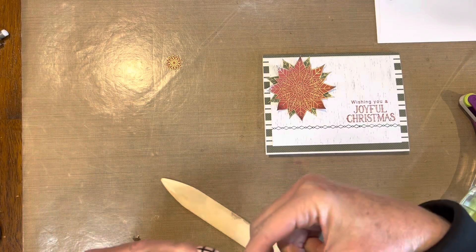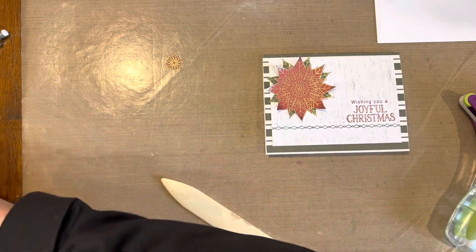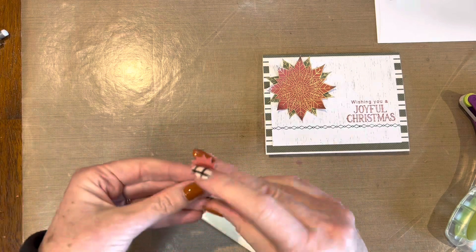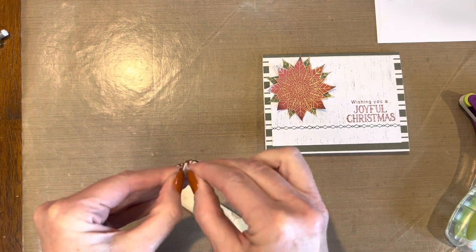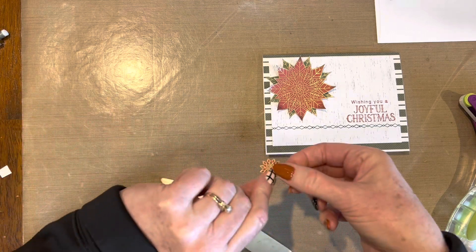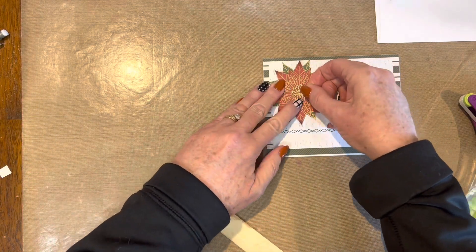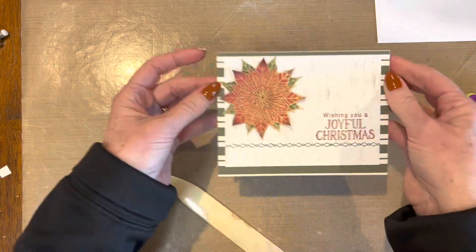Then I'm bringing in a little bit of foam tape and putting it underneath that smallest snowflake that I'm putting in the center of that poinsettia. I think that really gave it a lot of extra dimension.